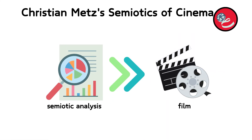By applying semiotic analysis to film, Metz opens up a detailed understanding of how films generate emotional and intellectual responses. His insights help explain why certain films resonate universally or culturally, showing how filmmakers use specific codes not just to tell stories but to evoke deeper psychological engagement from the audience. Metz's theories are instrumental for anyone looking to understand the underlying mechanisms through which cinema operates as a powerful form of modern communication and art.